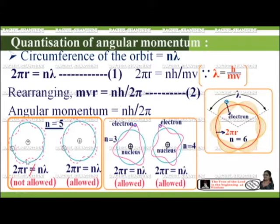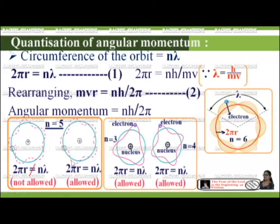Looking at the diagrams: when 2πr ≠ nλ, the wave does not fit the orbit circumference, so it is not allowed. When 2πr = nλ, the wave fits and is allowed. For example, when n = 5, we see 5 waves in the circumference; when n = 3, there are 3 waves; and when n = 4, there are 4 waves fitting the circumference.